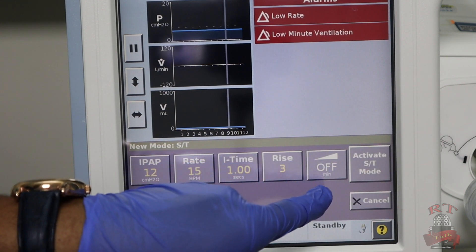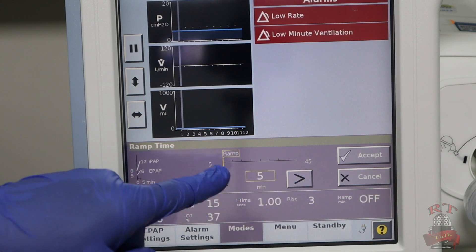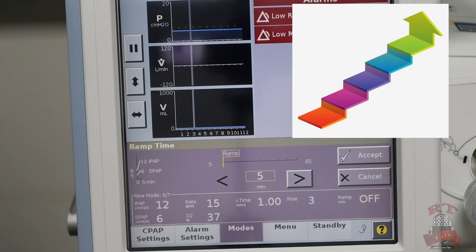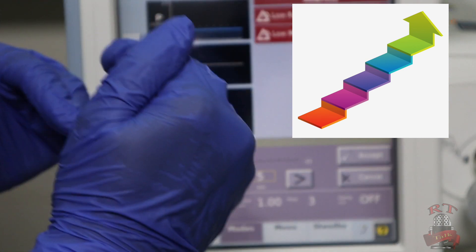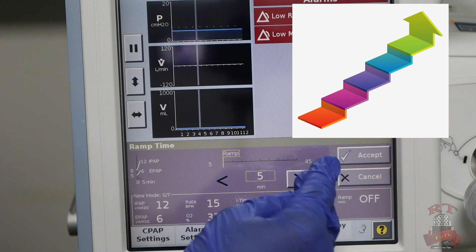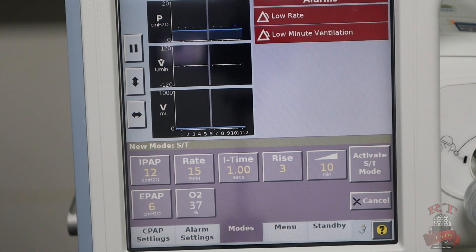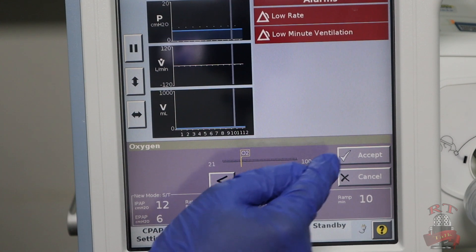Then the last thing here is the ramp time. As we said, do you want to start your settings, the IPAP and EPAP, directly when you put it on the patient? Or do you want to set your settings, put the mask on the patient, and your settings will go automatically, gradually up? For me, after 10 minutes. Your percentage of oxygen—I want it at 40. Accept.